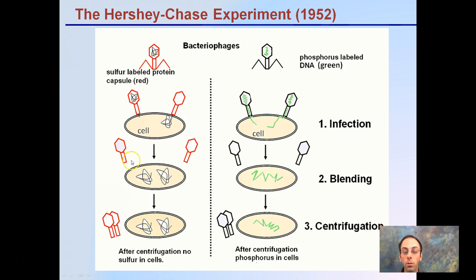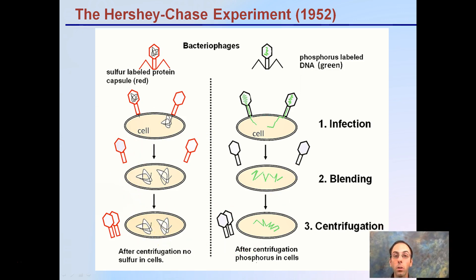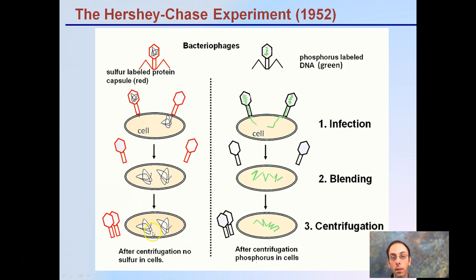After replication, the bacteria cells were centrifuged and examined. In the case where the sulfur-labeled protein — the outer coat — was tracked, no radioactive-labeled materials were found inside the actual cells.